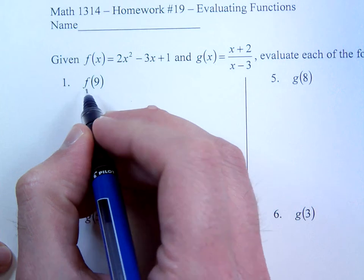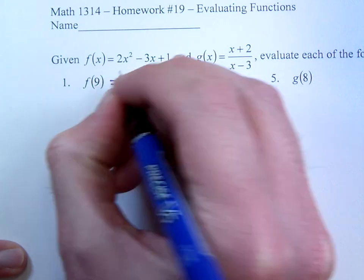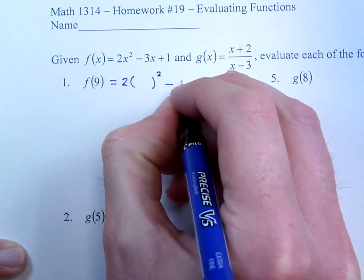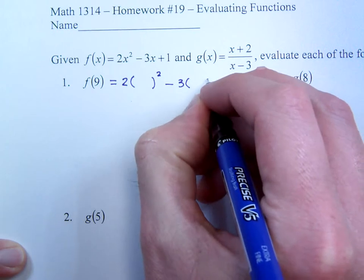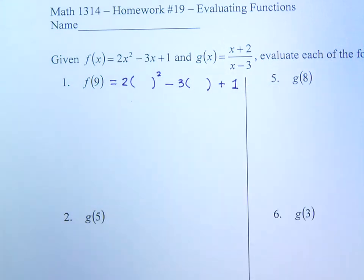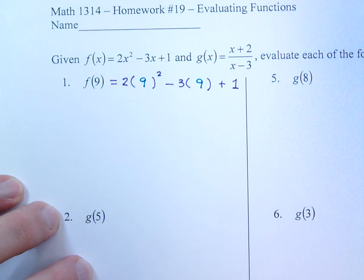This one here is f of 9, so we're going to use this first function. Now using proper function notation, we're going to replace all of the x's with parentheses because the input value here is 9. So we're going to replace all of these x's with 9 just like that.